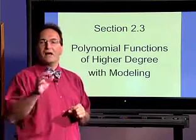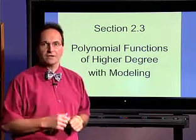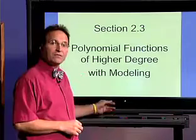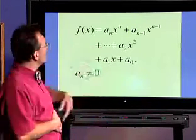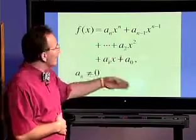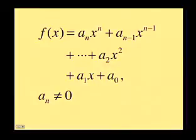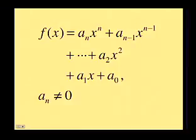A polynomial function of degree 3 is called a cubic function, and a polynomial of degree 4 is called a quartic function. Recall that a polynomial of degree n can be written as f(x) = aₙxⁿ + aₙ₋₁xⁿ⁻¹, continuing down to a₂x² + a₁x + a₀, where a₀ is the constant term. Remember that aₙ, the leading coefficient — the coefficient in front of xⁿ — cannot equal 0.